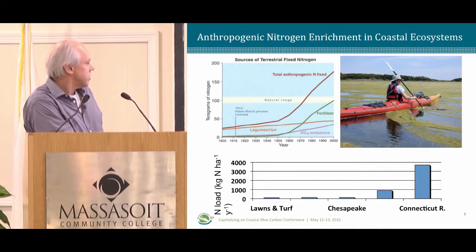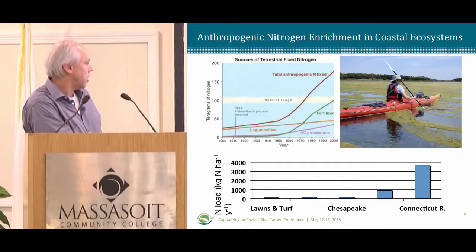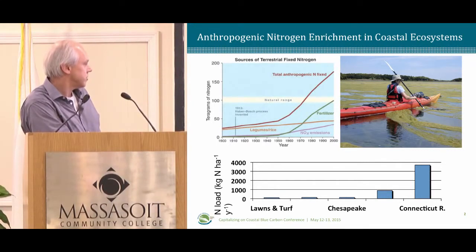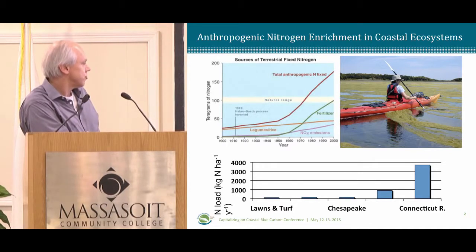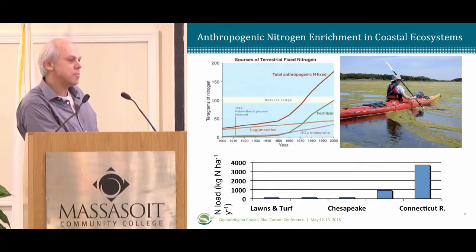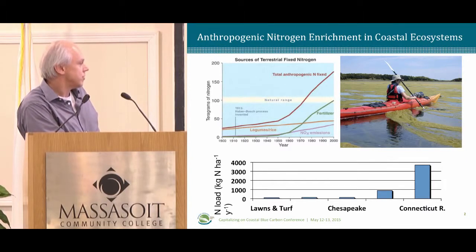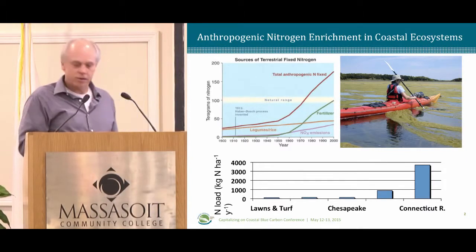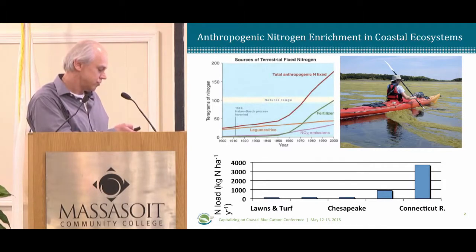We can see here in terms of kilograms of nitrogen supply per hectare per year that we fertilize lawns and turf at this rate. This is agriculture — a typical rate of fertilizer application. Chesapeake Bay as a whole receives a similar amount to an agricultural field, and then some other estuaries receive dramatically more nitrogen than agricultural fields do.